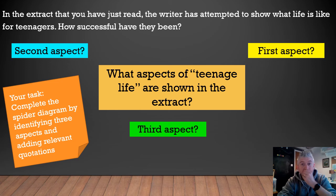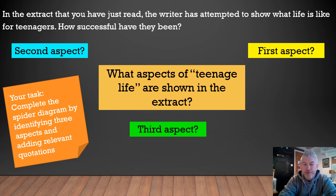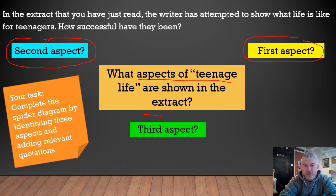So the extract that you've just read — the writer has attempted to show what life is like for teenagers. Well, it's not full life, is it? Just this little snippet of one particular moment in the lives of these characters. But how successful have they been? Your task now is to complete the spider diagram. I've kind of set it up for you — you can build on it from how I've done it, or you can start from scratch. The things I want you to really think about: what aspects of teenage life are shown in the extract? I think there are probably three — you might have spotted four, but three is enough. Your first job is to work out what are the different aspects of teenage life that the extract is showing to us.